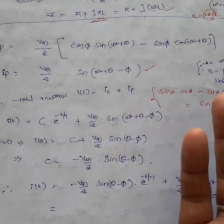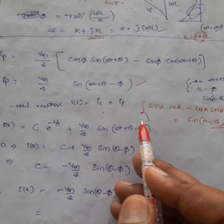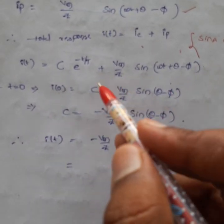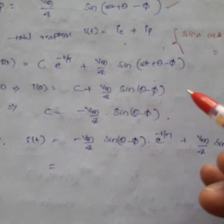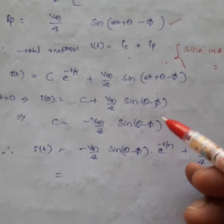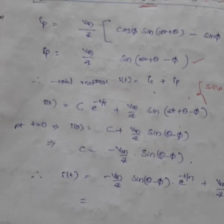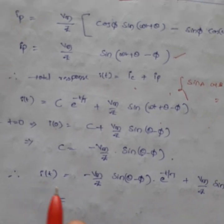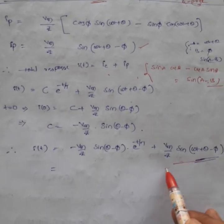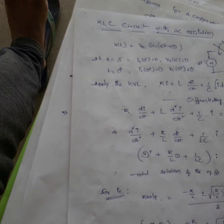The total response of the RL circuit is i(t) = C·e^(−t/τ) + (Vm/Z)·sin(ωt + θ − φ), combining the transient (complementary) and steady-state (particular integral) parts. At t = 0, i(0) = 0 due to the inductor's initial condition, which gives C = −(Vm/Z)·sin(θ − φ). Substituting back gives the complete expression for the total response of the RL circuit.